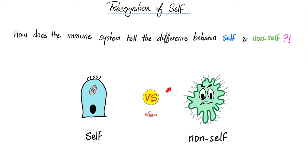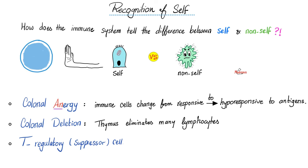Do you want your immune system to attack foreign invaders? Absolutely. Do you want it to attack your own cells? No, because that causes autoimmune disease. How does the immune system tell the difference between self and non-self? Three mechanisms: Number one, clonal anergy — T-lymphocytes that might attack your own cells are made weak and lazy. Number two, clonal deletion — the super-reactive ones are deleted in the thymus. Number three, T-regulatory cells, formerly T-suppressor cells, suppress immunity just a little.